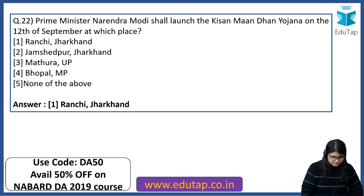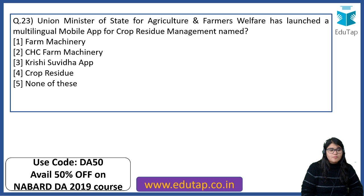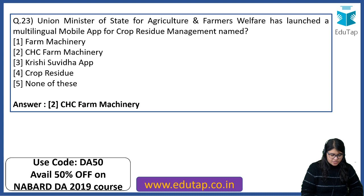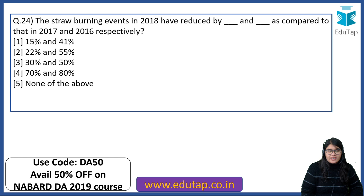The Union Minister of State for Agriculture and Farmers Welfare launched a multilingual mobile app for crop residue management — what is it named? The right answer is CHC Farm Machinery. Straw burning events in 2018 have reduced by 15% and 41% as compared to 2017 and 2016 respectively.